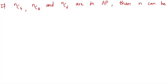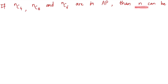Hey everyone, in this video we are going to solve a very interesting question. If n choose 4, n choose 5, and n choose 6 are in arithmetic progression, then what can n be? This question is asking about what values of n make these three numbers in AP.